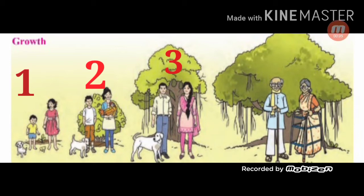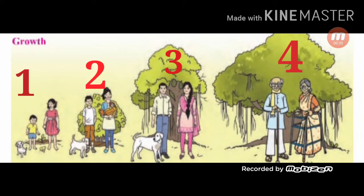In the third picture, we can see that the young dog has turned into a fully grown dog, the boy has turned into a young man, and the girl has turned into a young lady. And the bush has turned into a tall tree. In the fourth picture, we can see that the young man has turned into an old man, the young lady has turned into an old woman, and the tall tree has turned into a huge tree. These pictures show that a baby grows up to become an adult person — maybe a woman, maybe a man.